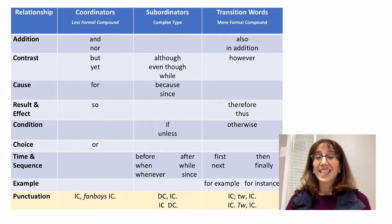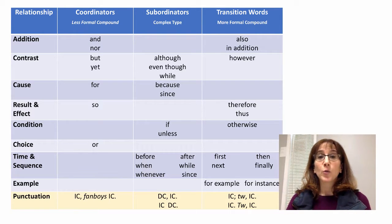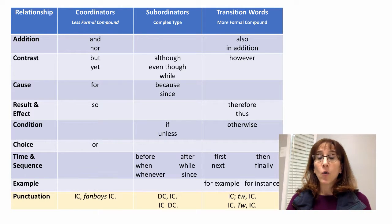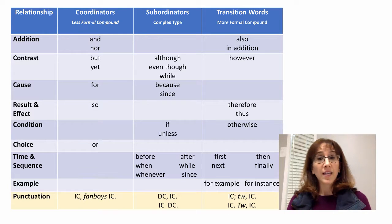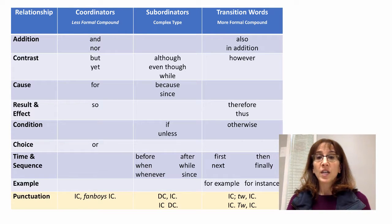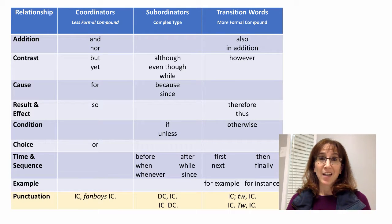The other thing to understand about connecting words is that they all show relationships. Maybe you want to show a relationship between two ideas — for example, addition. You can choose what kind of connecting word to use: a coordinator or a transition word. If you want to show contrast, you can choose a compound or complex sentence type. Here is a chart that can help you understand that they all have a relationship, and you get to choose the sentence type you want to create.